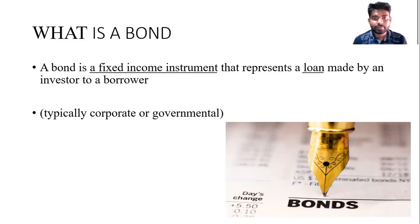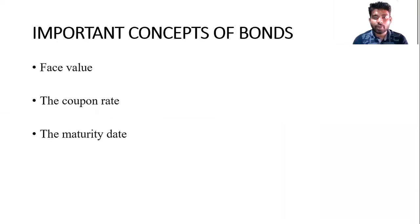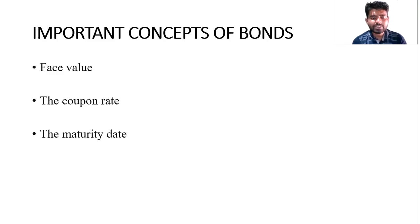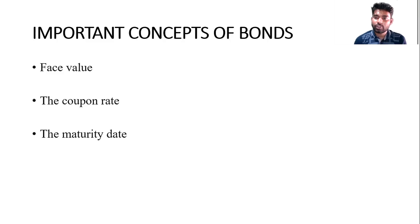When you are lending money to someone, you definitely expect something in return. In return, the government or corporate will give you a fixed interest rate, which is also called a coupon. Every bond will have a certain face value at the time of issue, a coupon rate — say six, seven, or eight percent — paid periodically, yearly or semi-annually, and a maturity date at which your entire principal is paid back.